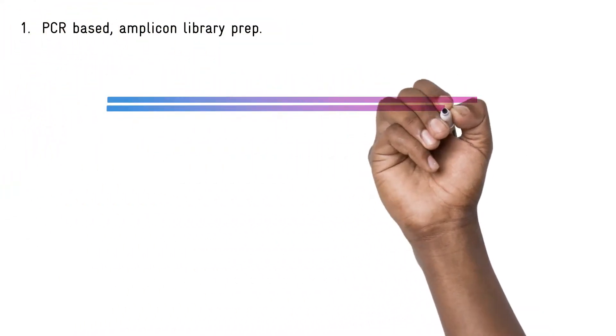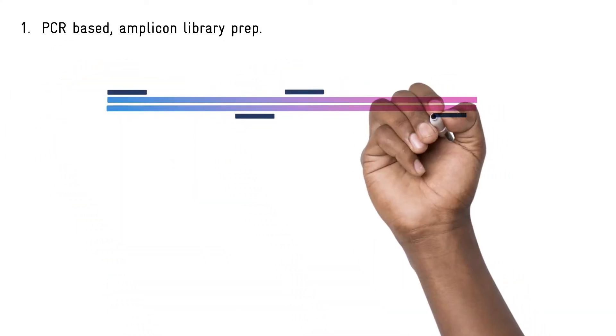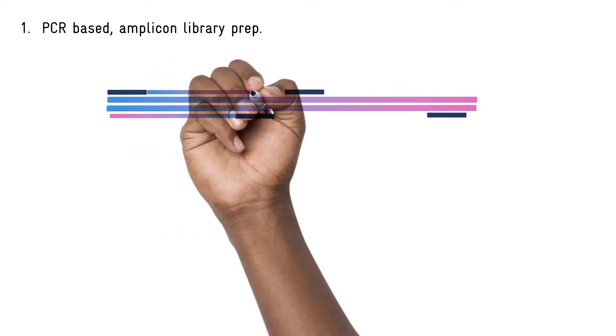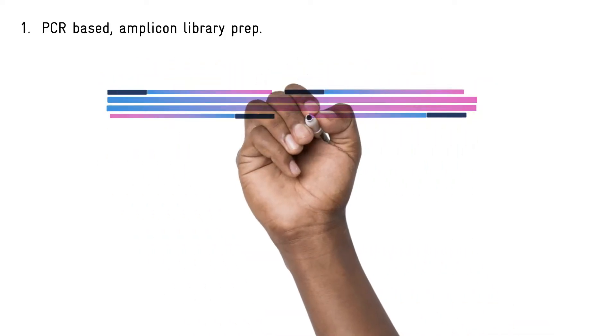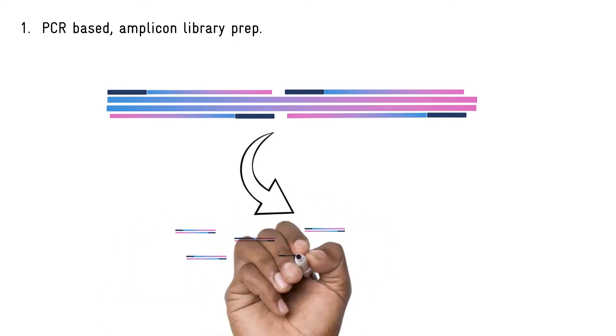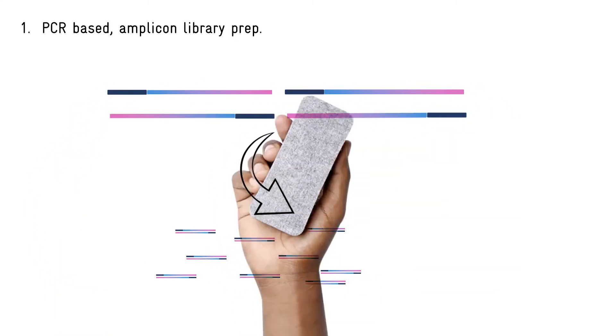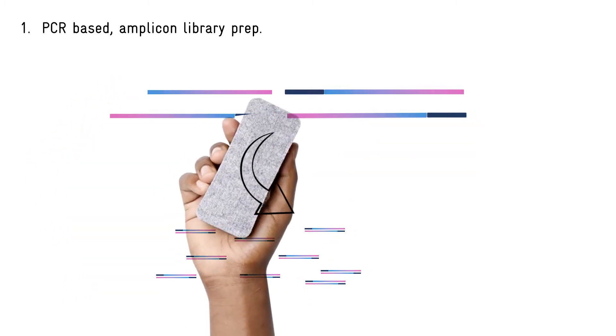PCR is the most targeted and precise way to create inserts. Primers bind to the targets of interest and then a polymerase creates amplicons of the exact size required for a perfect library. This method amplifies the target too, which has the advantage of increasing the sensitivity of your test, so it allows you to work with samples at a lower concentration or poorer quality DNA.